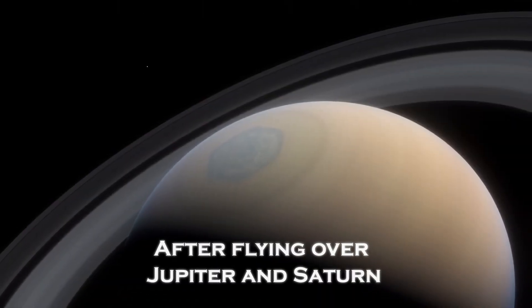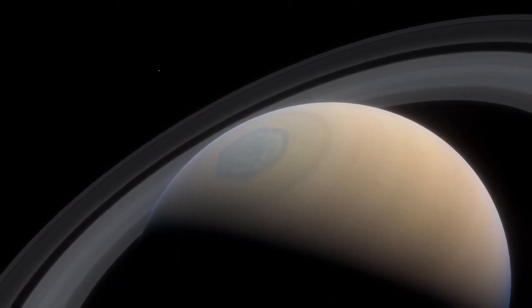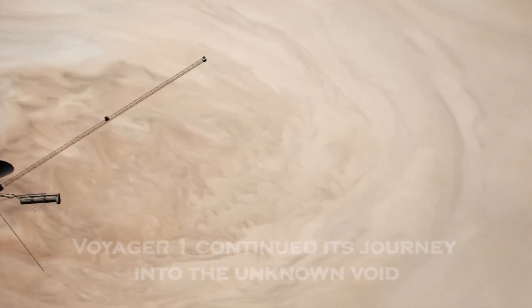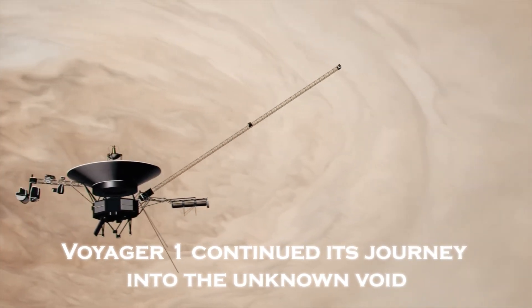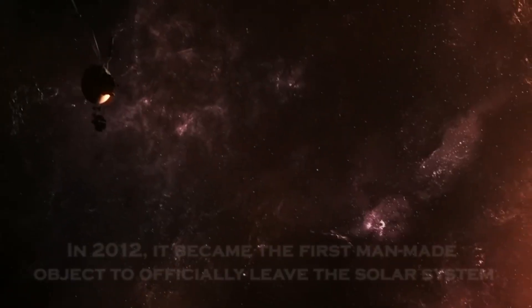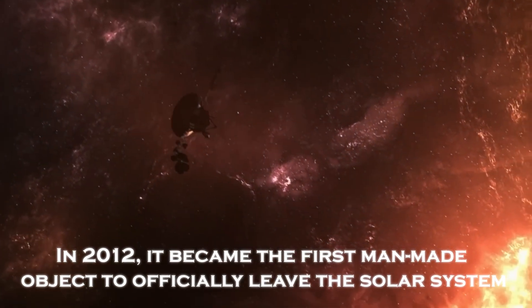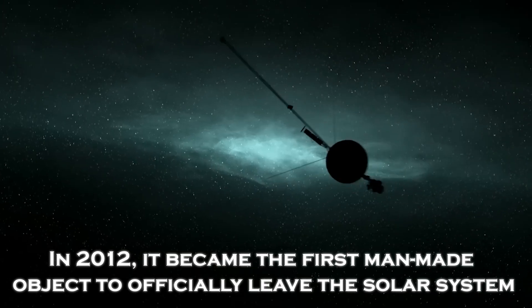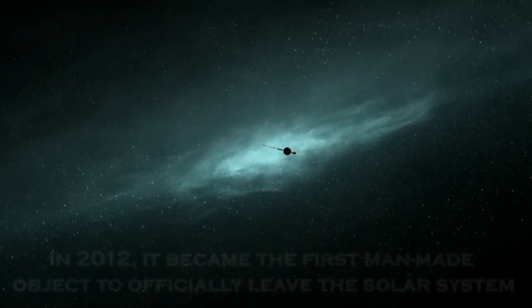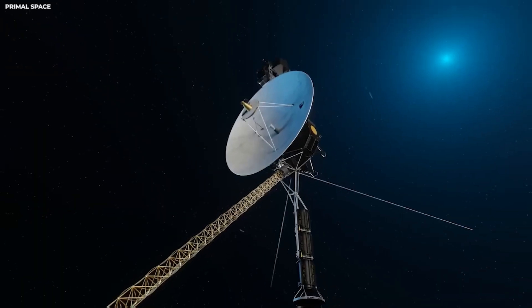After a flyby over Jupiter and Saturn, sending us unprecedented images and data, Voyager 1 continued its journey into the unknown void. In 2012, it became the first man-made object to officially leave the solar system, crossing the Heliopause and entering interstellar space.